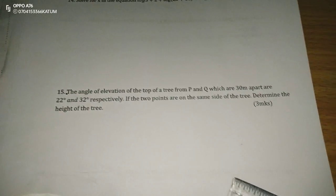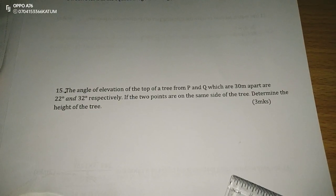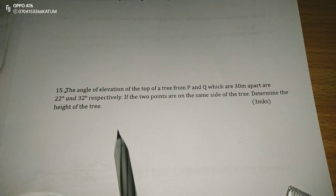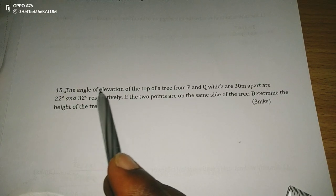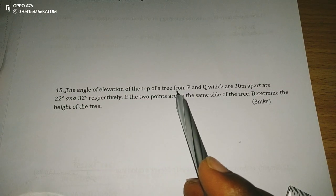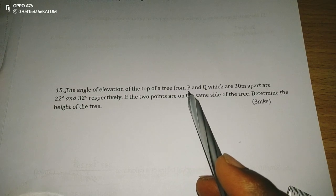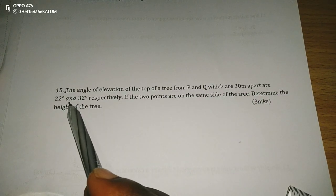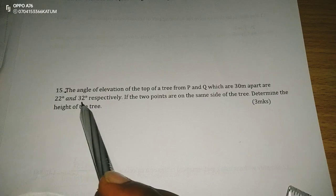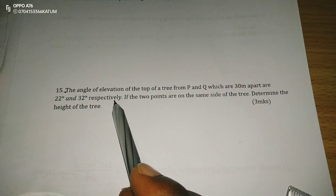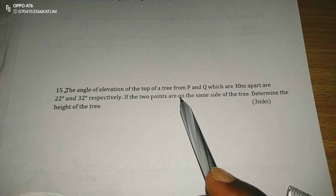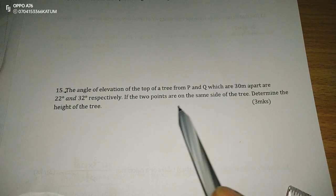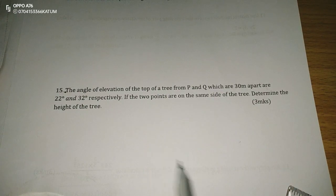Thank you for joining this lesson. We're going to study trigonometry and its applications. We are told in this number 15 that the angle of elevation of the top of a tree from P and Q, which are 30 meters apart, are 22 degrees and 32 degrees respectively. If the two points are on the same side of the tree, determine the height of the tree.